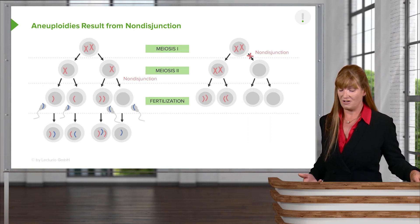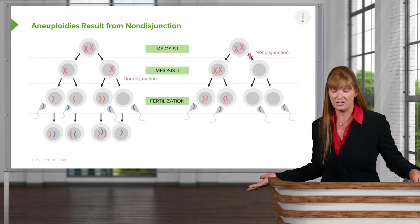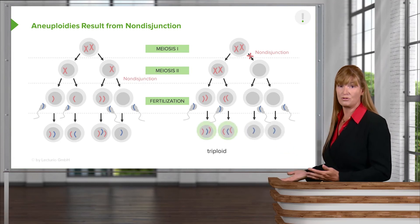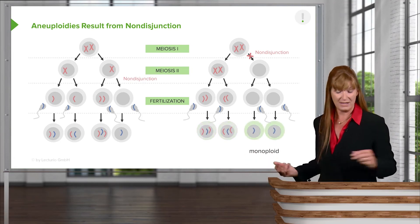Two sister chromatids that are the same. When we see fertilization, we have the same thing happen. We end up with two triploid cells or two monoploid cells.